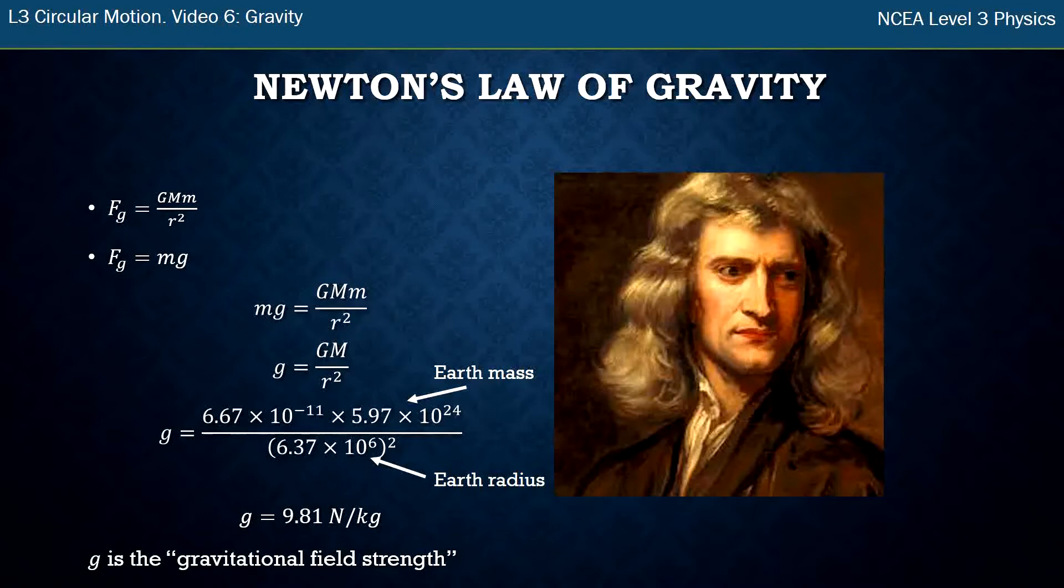So if we were on a different planet—if we were on Mars, for example—it would have a different Mars mass and it would have a different Mars radius, and then that's how you'd work out the gravitational field strength of Mars.